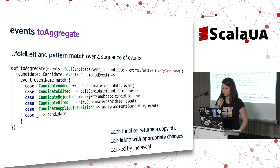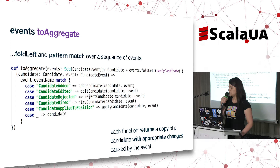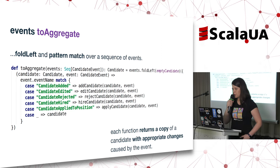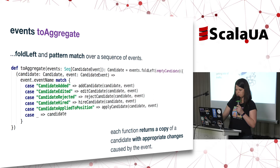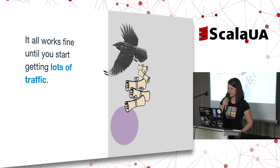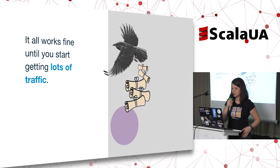Here's some code — my favorite function in the whole pattern. You take an empty candidate, take a sequence of events, and fold-left the events on the empty candidate. Each of these functions returns a new copy of the candidate with all the changes applied. There's also some pattern matching. I was told you can do this in Redux too — you can do event sourcing in all kinds of things, not just with Scala. It's just a pattern. You can do it with anything you want.